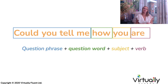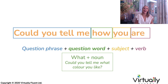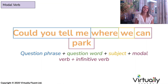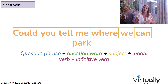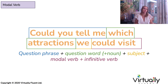It's important to note that you may see some different variations of this question word. Sometimes with 'how' you will see an adjective following after it — for example, 'how old', 'how big', 'how small', 'how long'. After 'what', you might see a noun, and this is exactly the same for 'which' and also 'whose'. If we have a modal verb, this also goes at the end — after our subject, we have our modal verb and then our normal infinitive verb. For example: 'Could you tell me which attractions we could visit?'